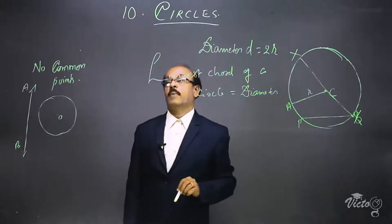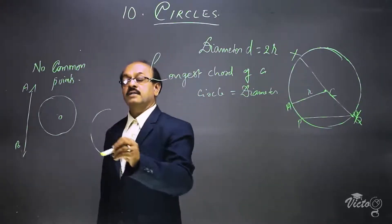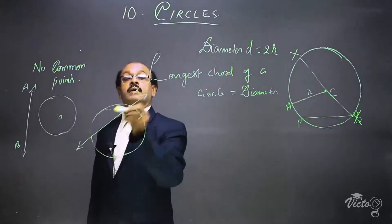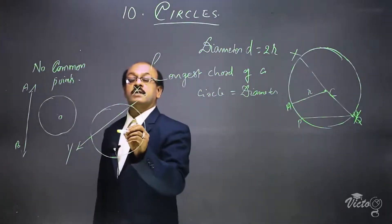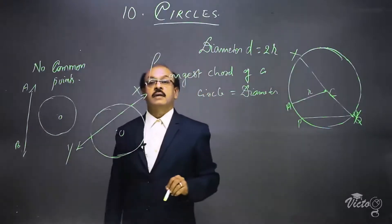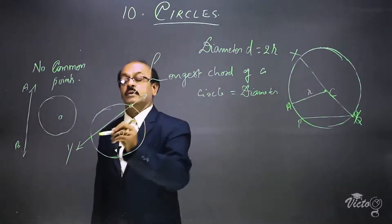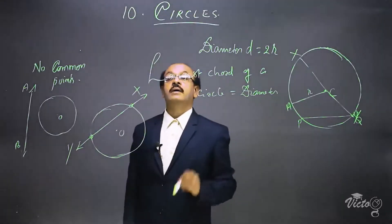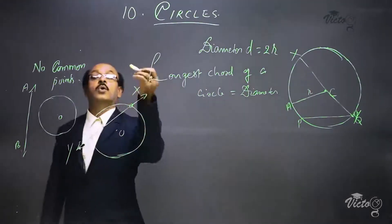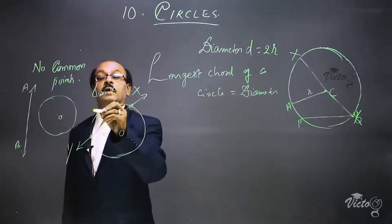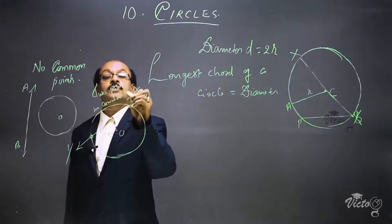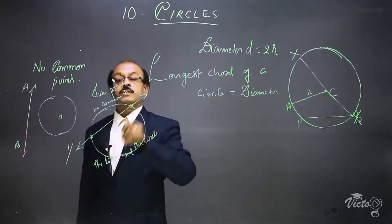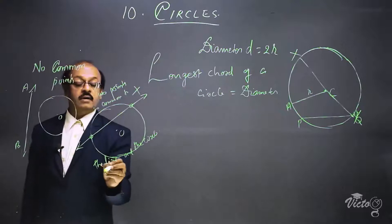The second case: here is a circle with center O and a line XY. The line and the circle have two points in common. So this line is called a secant line — two points are common to the line and the circle, and therefore this line XY is called a secant line of the circle.